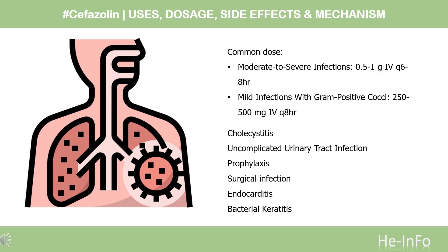Surgical infection prophylaxis: Cardiac procedures, hysterectomy, oral or pharyngeal procedures, craniotomy, joint replacement, thoracic procedures, arterial procedures, amputation, traumatic wounds, high-risk esophageal, gastroduodenal, or biliary tract procedures: 1–2g. Colorectal procedures: 1–2g plus metronidazole 0.5g. High-risk cesarean section or second trimester abortion: 1g. Ophthalmic procedures: 100mg subconjunctivally. Endocarditis: 1g IV/IM 30–60 minutes before procedure.